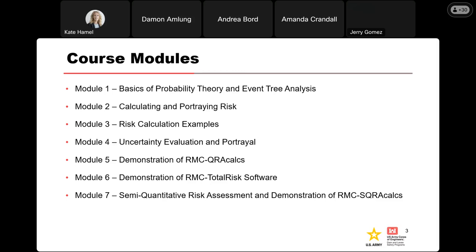Module five and module six will cover some of the spreadsheet tools and software that we have to help us with these risk calcs. Module five will be RMC QRA calcs and module six will be RMC Total Risk, which should be released by the time we get there — if not, I have draft versions I can share. Finally, module seven is going to cover semi-quantitative risk assessments and we'll demonstrate how to use the RMC SQRA calcs tool.